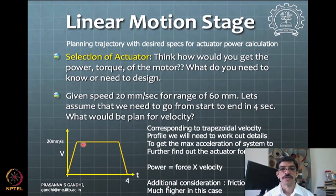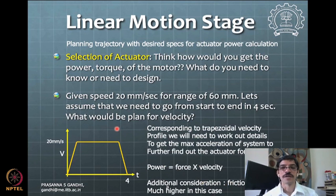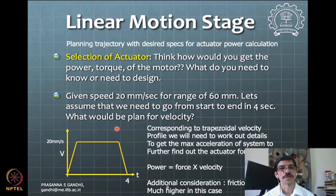At constant speed, no inertia force appears. So these are the kinds of estimates one builds up for power — first the power corresponding to inertia, then the power corresponding to friction losses, and then the total power in the system. This is a typical exercise for any mechatronic system's sensor and actuator selection.